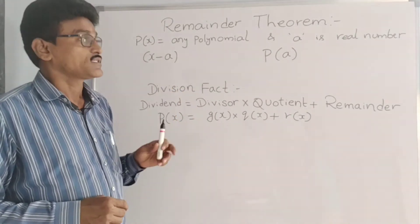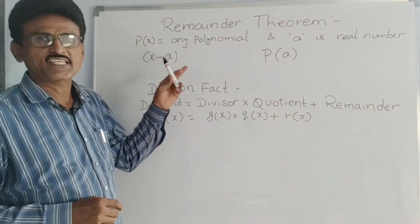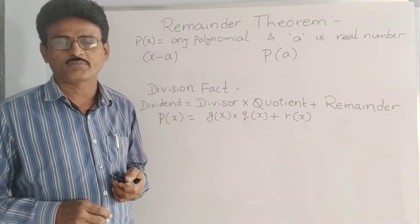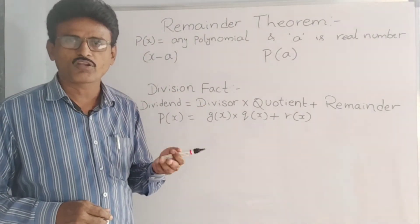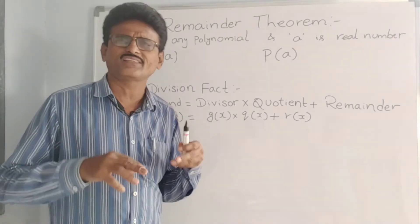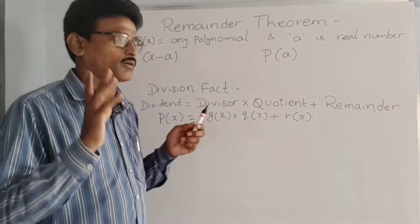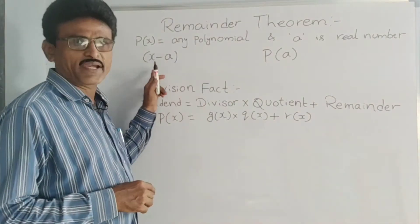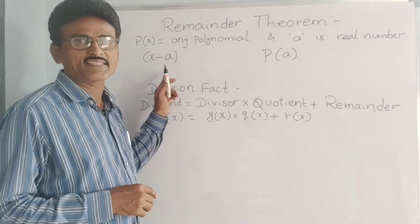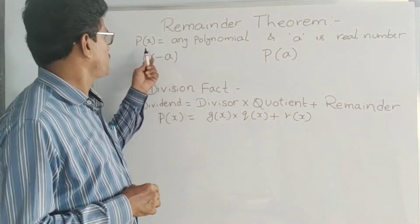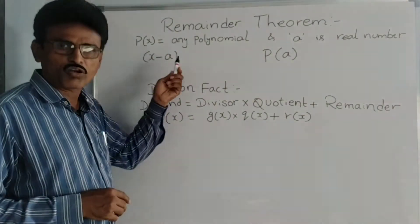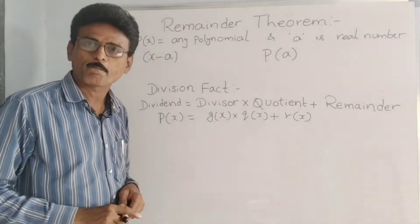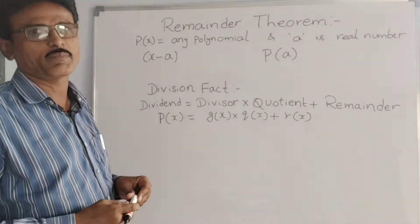What is remainder theorem? P of x is any polynomial of first degree or greater than first degree — it is linear polynomial, quadratic or cubic polynomial, nth degree, any polynomial. And a is a real number. Now x minus a is a linear polynomial. If we divide P of x polynomial with x minus a, then the remainder is P of a. This is the remainder theorem.